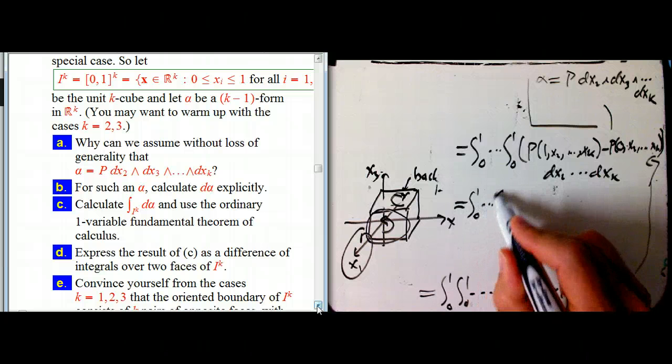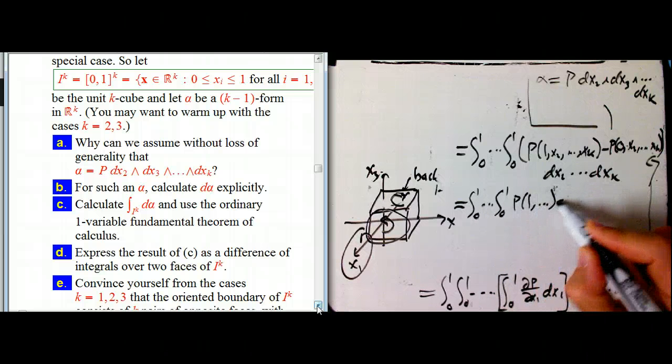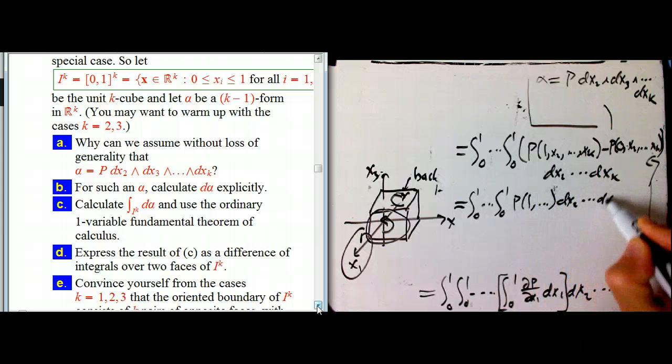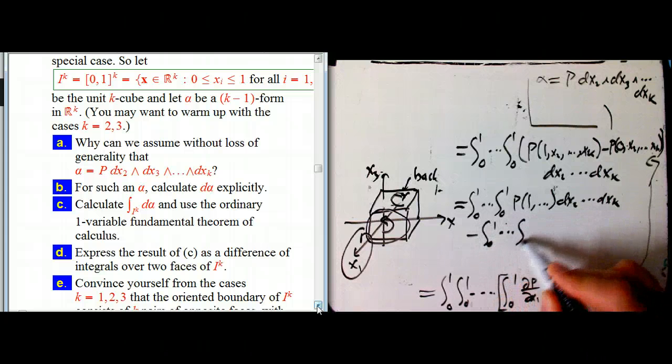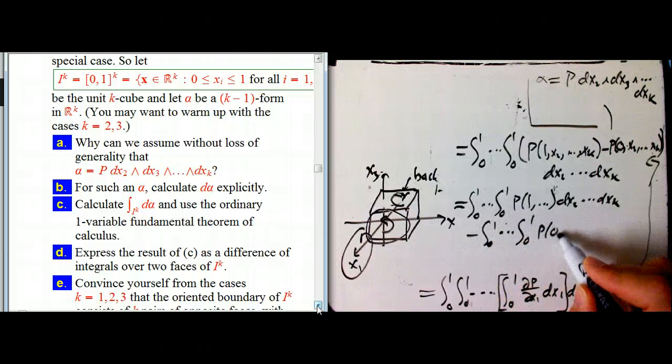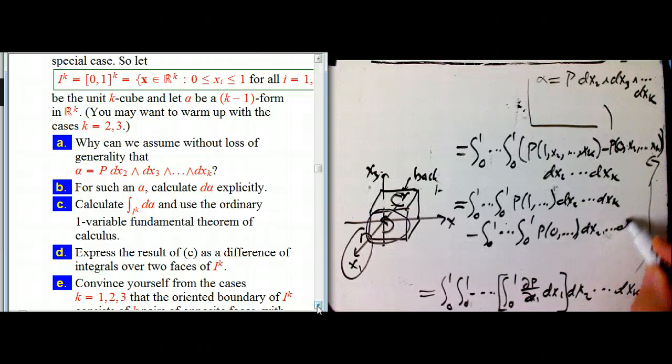So let me just separate that into two pieces. That's the integral over the x_2 through x_k of p of one, et cetera, dx_2 dx_k, minus the integral over all these other variables p of zero, et cetera, dx_2 dot dot dot dx_k.